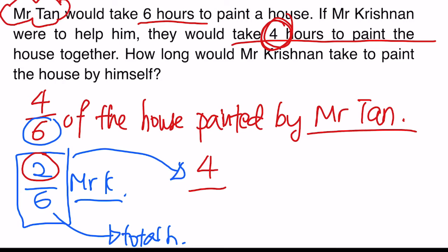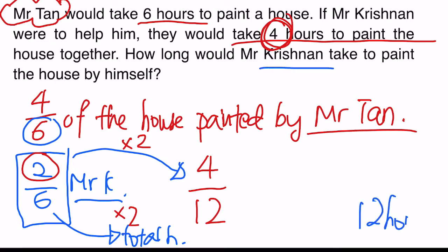So what I'm going to do is change it to a denominator of four. To do that, we have to multiply the top and the bottom — it's like working with equivalent fractions. I multiply by two and get twelve. So four-twelfths. To answer the question, Mr. Krishnan would actually take twelve hours to paint the house by himself. The numerator four means the time working together with Mr. Tan; the bottom twelve is what he takes to paint by himself.